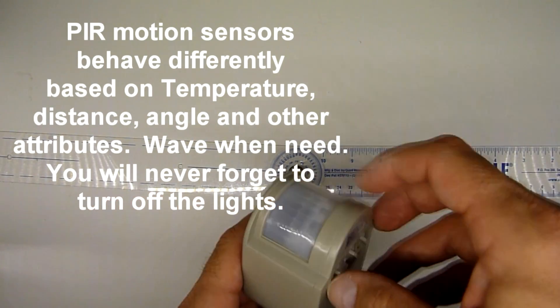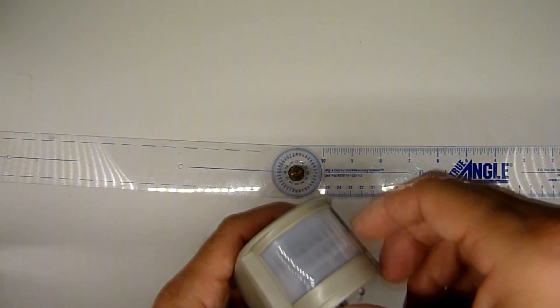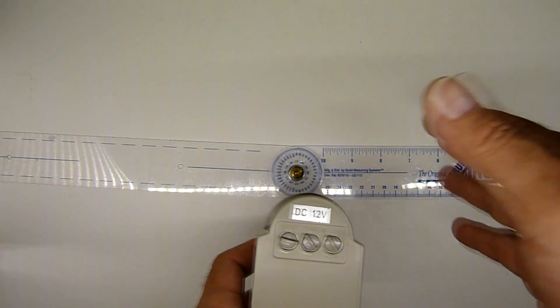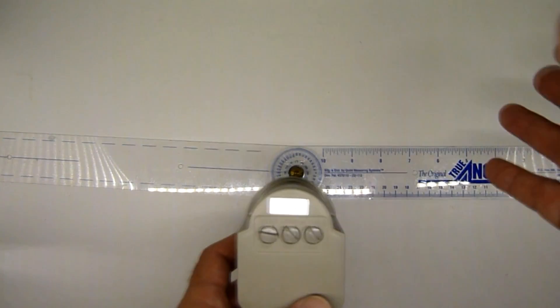So you can adjust the sensitivity down, but it gets a little hard because if you're trying to get, like, a walkway on the edge sensitive and the distance not, or vice versa.